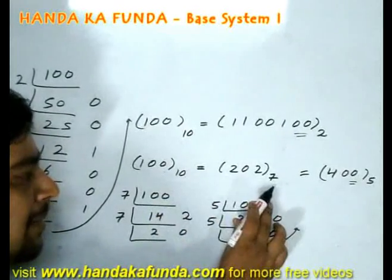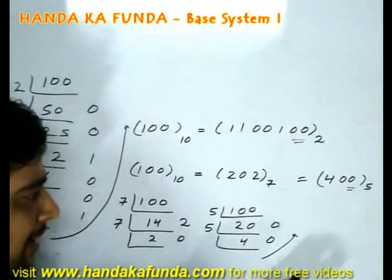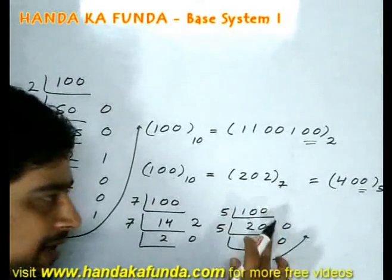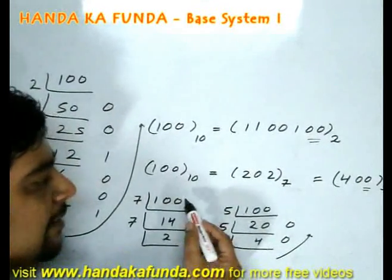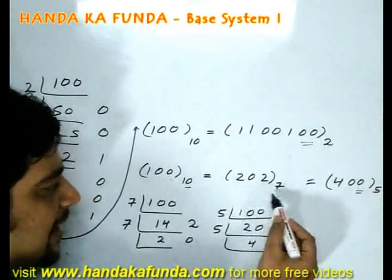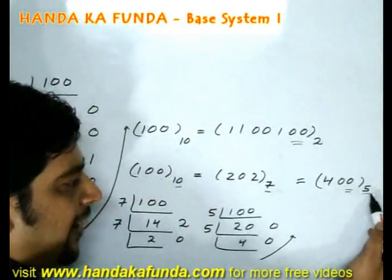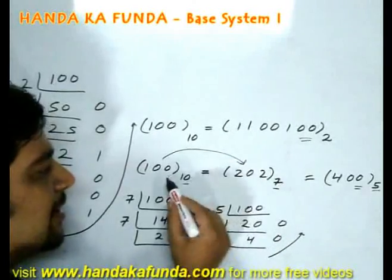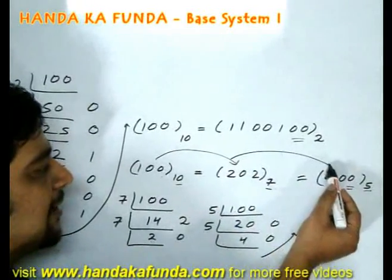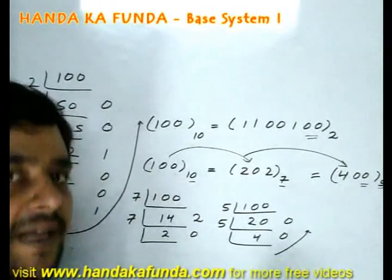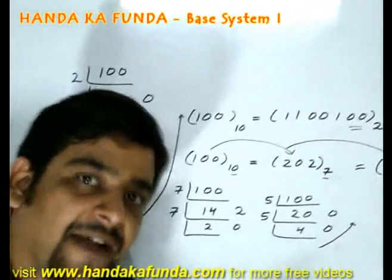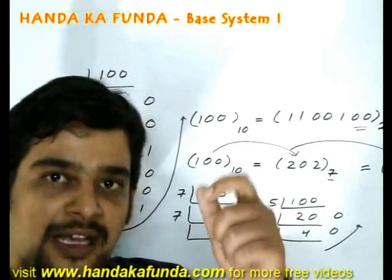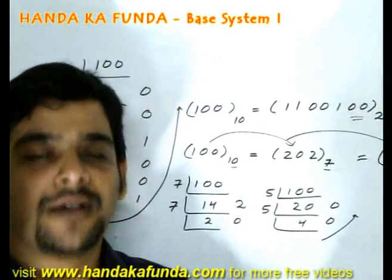100 is not divisible by 7, which is why I get 2 as the last digit — because 2 is the remainder when 100 is divided by 7. Notice that as the base decreases from 10 to 7 to 5, the represented value increases from 100 to 202 to 400. This will always hold true: if you increase the base, the value goes down; if you decrease the base, the value goes up.